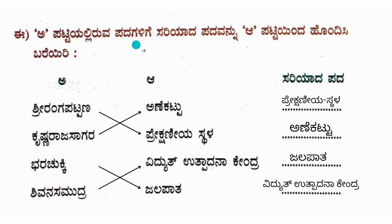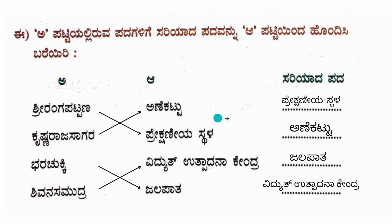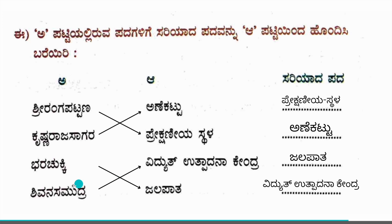A pattiyel liruwa padagalighe sariyadha padavannu A pattiyemdha hondisibareri — this is a match the following exercise. Shriranga Patna is a sightseeing place — prekshaniya sthala. Krishnarajasagara is a dam — ane kattu. Barachukki is a waterfall — jalapatha. Shivana Samudra is a power generating station — vidyut utpadana kendra.